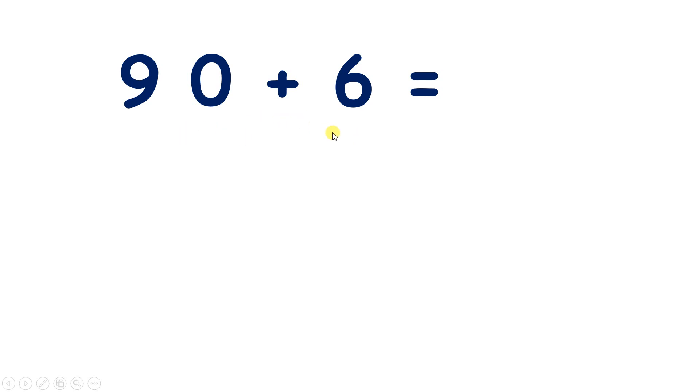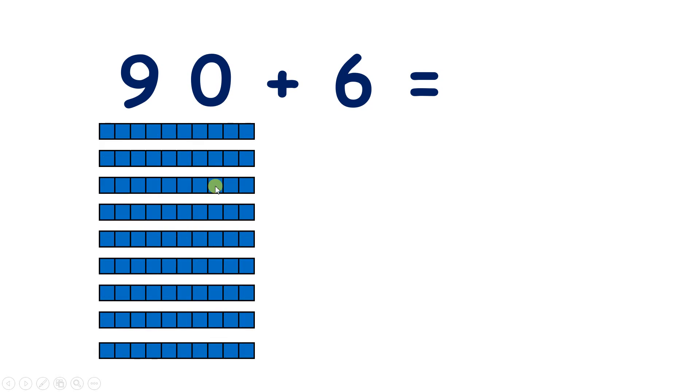Now what is 90 plus 6? Well, we have 90, which is 9 tens. And if we add 6, so we now have 9 tens and 6 units, we have the number 96.